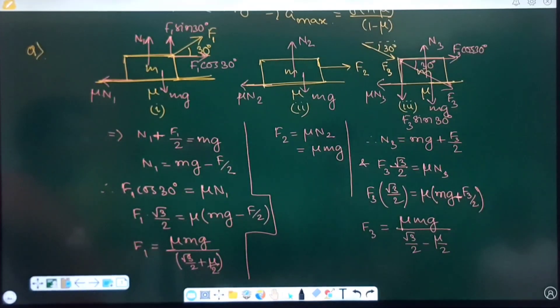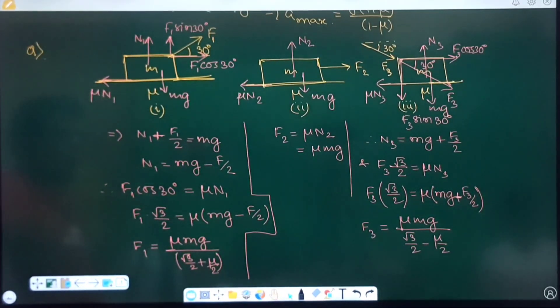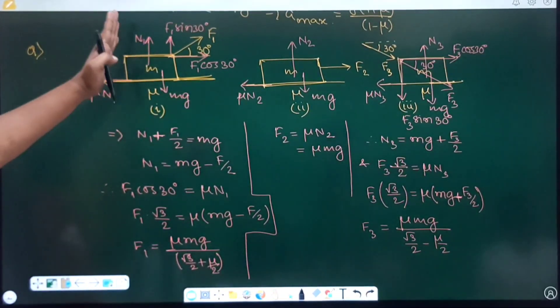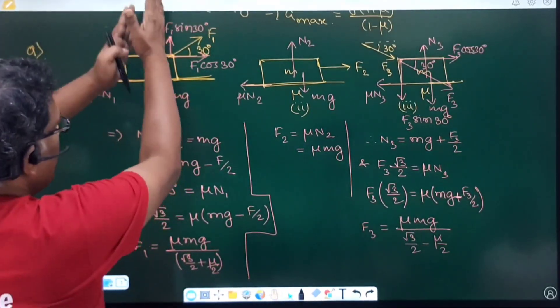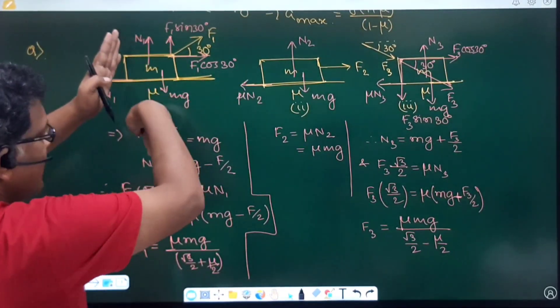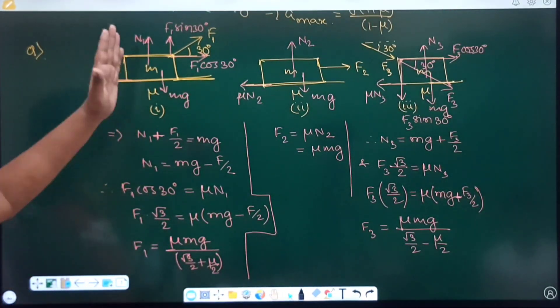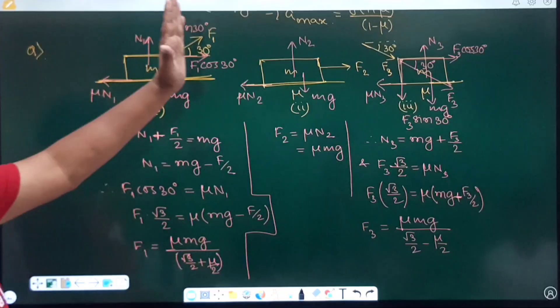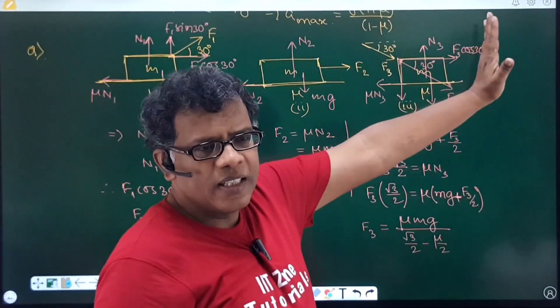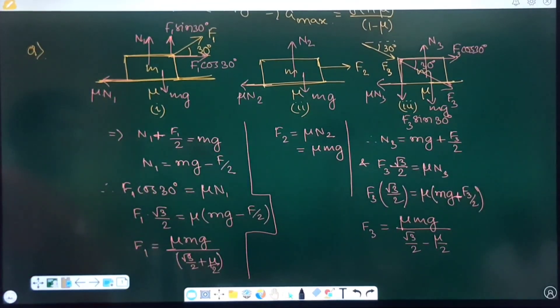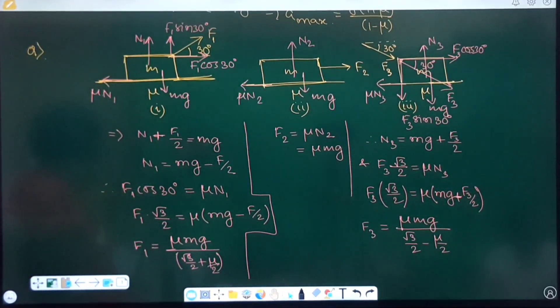Third case, normal contact force is maximum and it is minimum in first case. Because first case, normal contact force plus the component of applied force which is acting vertically upward, they are together, F1 sine component and N1, they are together balancing Mg. So, N1 is individually less than Mg. So, in first case, N1 is less than Mg. In second case, N2 is equal to Mg. And in third case, N3 is more than Mg. So, limiting friction is maximum in case 3 and limiting friction is minimum in case 1.